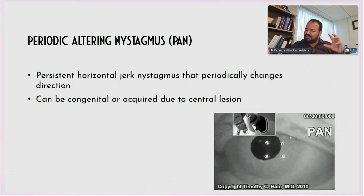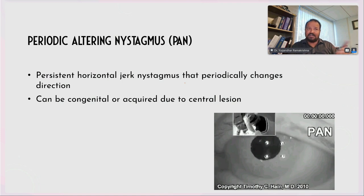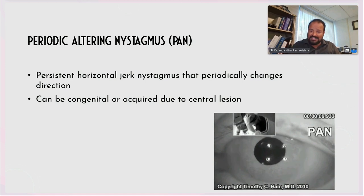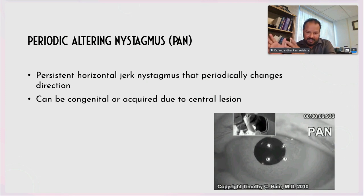Then there's periodic alternating nystagmus. It almost looks the same as congenital but is truly not. This recording is courtesy of Dr. Henn. This nystagmus is not common and does actually indicate central involvement. It's a persistent horizontal nystagmus that periodically changes direction. Many clinicians want to be quick during testing — we understand, it's a long procedure. But whenever you see spontaneous nystagmus, especially if you find evidence toward central involvement or the case history indicates central, take extra time and attention.